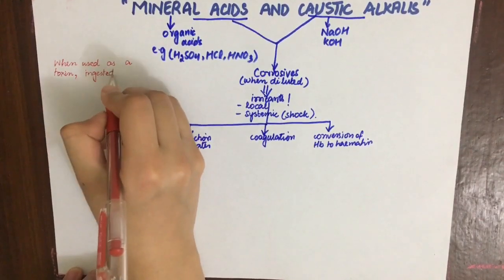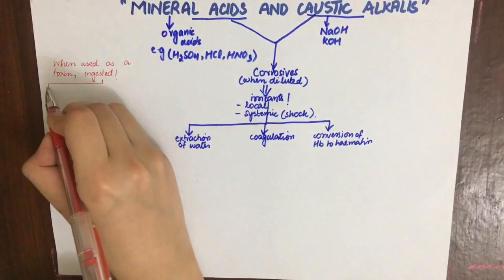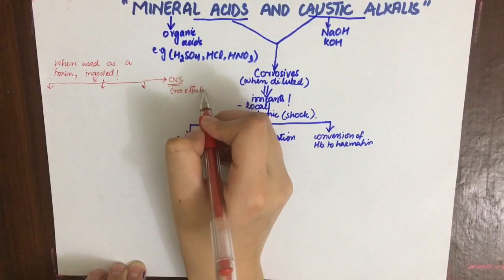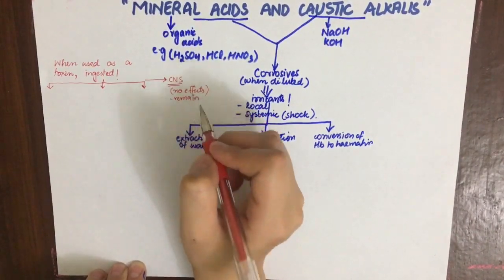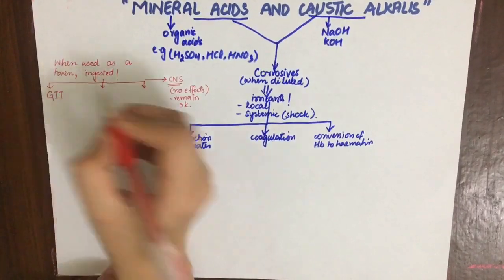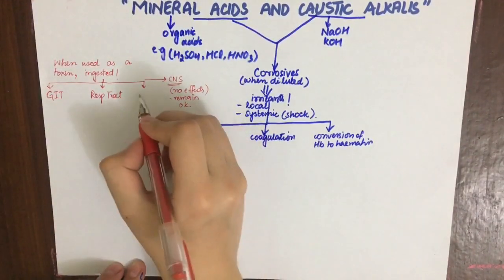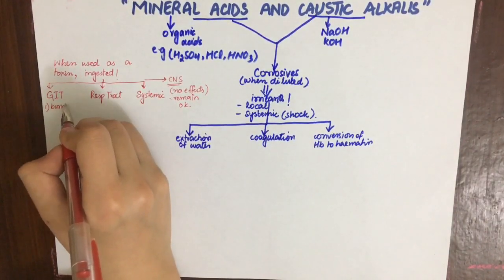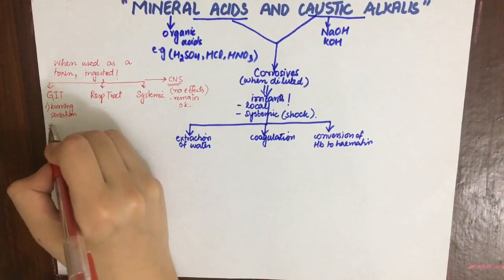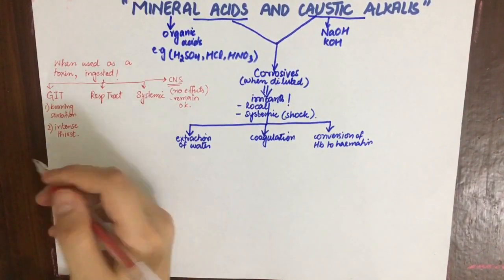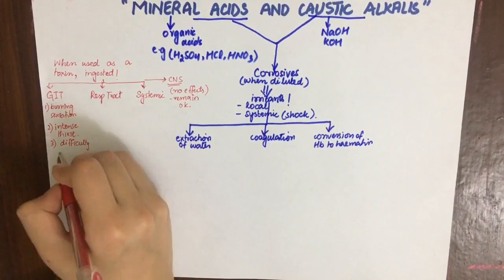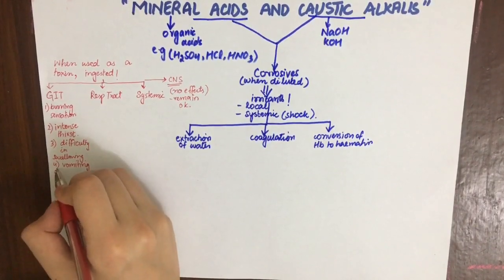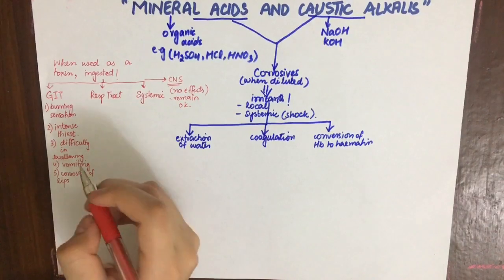In case of toxicity, symptoms are immediate. They are divided into four groups — notably, CNS symptoms are not present and consciousness is retained by the patient till the end. GIT symptoms include burning sensation, intense thirst, difficulty swallowing, continuous vomiting, corrosion of mouth and lips with trickle marks down the neck, and swollen tongue.